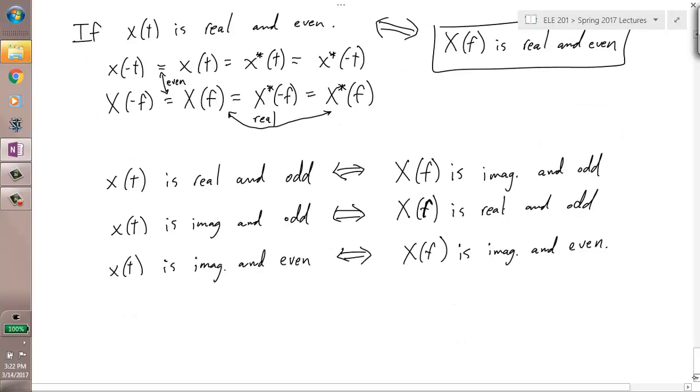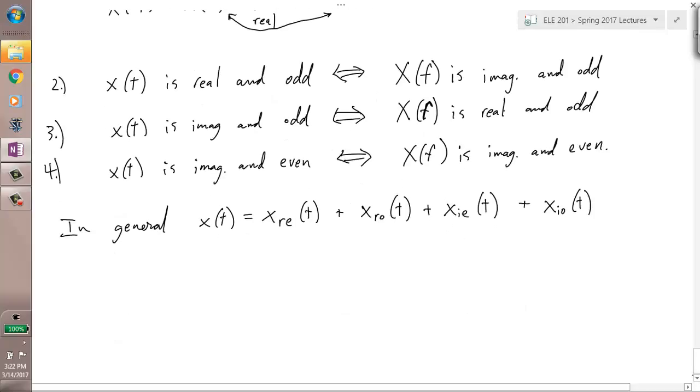So the easy way to remember what's going on here is if it's even, there's no change. Real parts stay real, imaginary parts stay imaginary. If it's odd, then it flips. Real parts become imaginary, imaginary parts become real. Now, it's not going to be that frequent that your signal is one of these four characteristics, right? So we could label these 1, 2, 3, 4. It's not necessarily that your signal is going to be that, but your signal, any signal, can be decomposed into four parts, each having one of these properties.